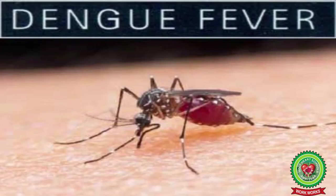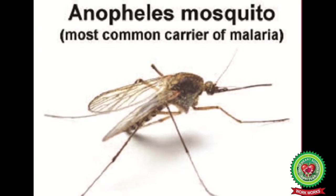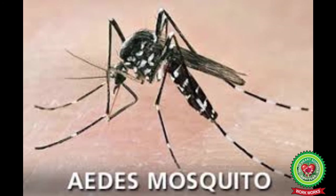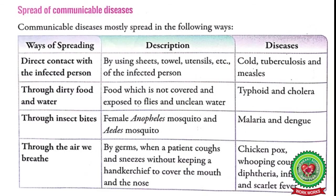Diseases like malaria and dengue spread through insect bites. If a female Anopheles mosquito or an Aedes mosquito bites a person, he may suffer from malaria and dengue respectively. Anopheles is the genus of mosquitoes that transmits the malarial parasite, and Aedes is the genus of mosquitoes that transmits diseases like dengue fever, yellow fever, and chikungunya.